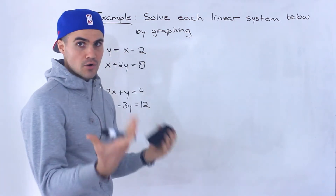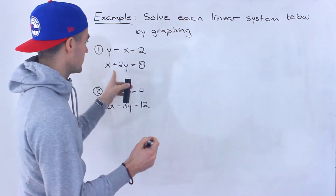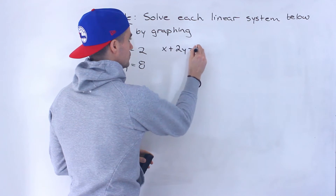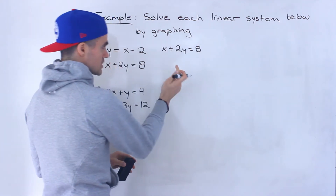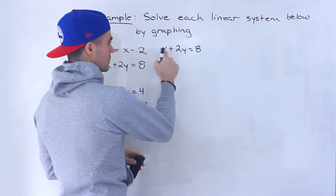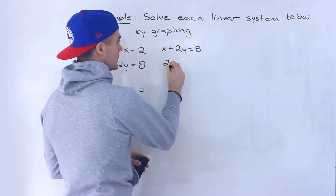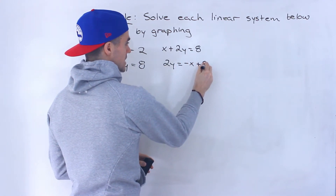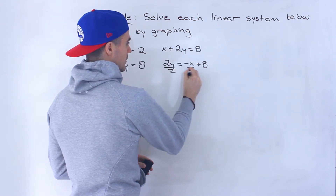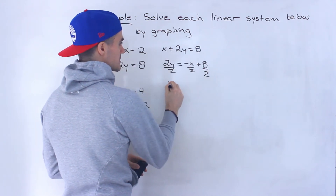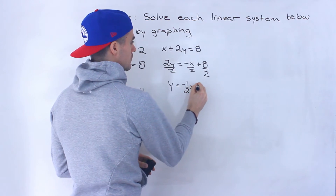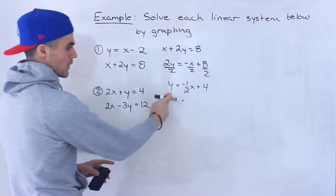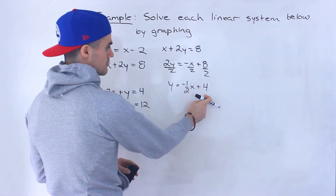Notice that the first line is already in y equals mx plus b format, but this one isn't. So the first thing I'm going to do is change this to be in y equals mx plus b format. We need to isolate for y. I'll bring the x over so that'll be negative x plus eight, then divide everything by two to get y by itself.